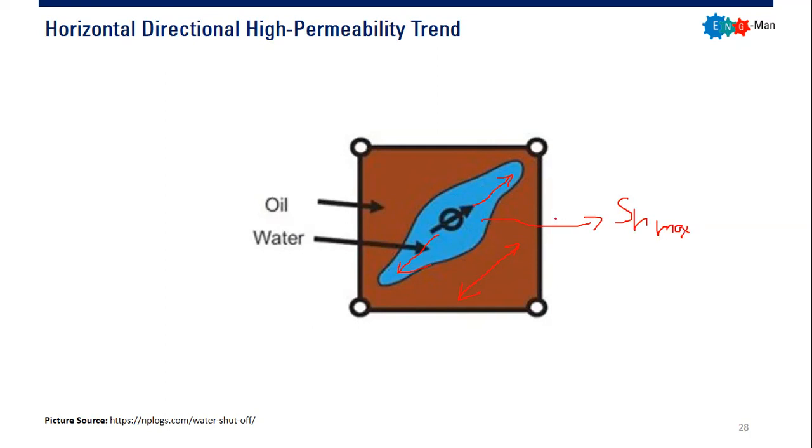Fractures will be propagated following this direction. In many cases, this direction where the high permeability trend is developed is because of the direction of the maximum horizontal stress. But not always. In many cases as well, this is just due to depositional issues. Originally, the deposition is developed like that. Somehow permeability trend is greater in a particular direction, whether it's like this or like this, driven by the deposition. But again, it can also be due to the maximum horizontal stress direction.